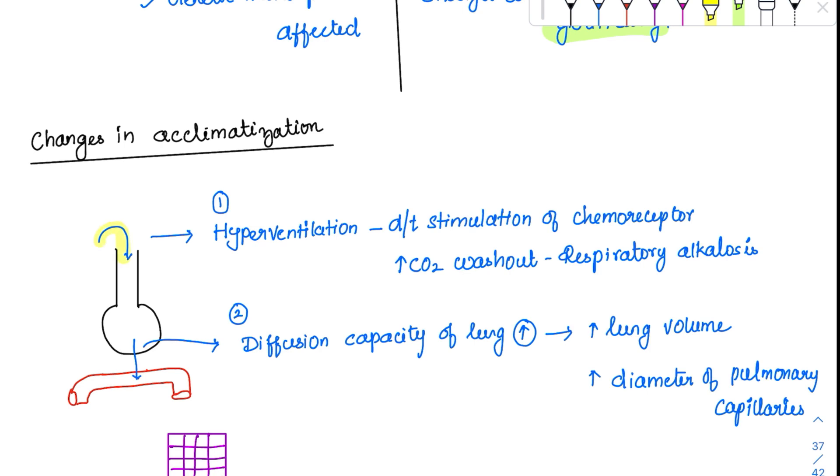First, there is hyperventilation. As we ascend, this is the first sign. Hypoxia stimulates peripheral chemoreceptors causing hyperventilation. But this causes CO2 washout, causing respiratory alkalosis. The kidneys help overcome this by conserving H+ and inducing metabolic acidosis to counteract the respiratory alkalosis.